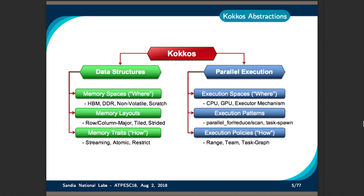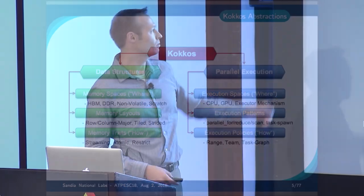To enable the abstractions, Kokkos also provides an abstract data structure called a View. This allows users to control the memory layout, the memory space — which is where the data allocation should reside — as well as memory traits to indicate how the data should be accessed, for example through streaming, atomic, or restricted access.